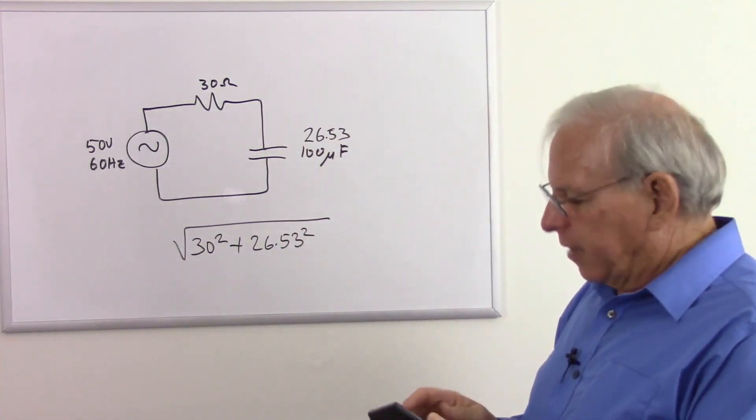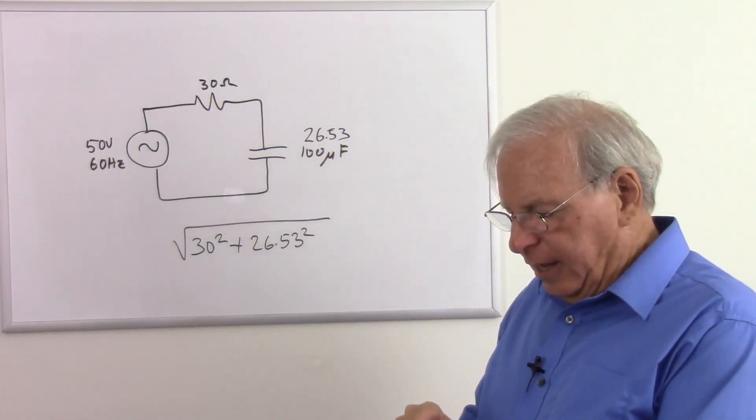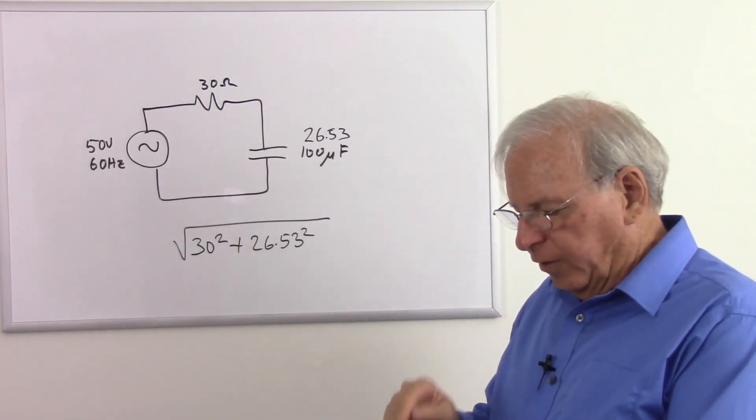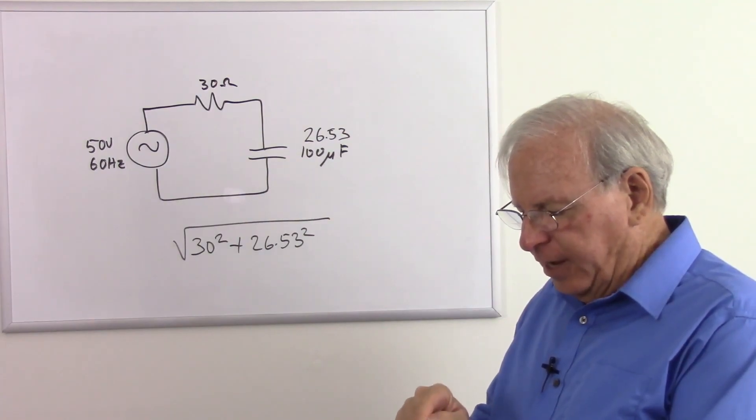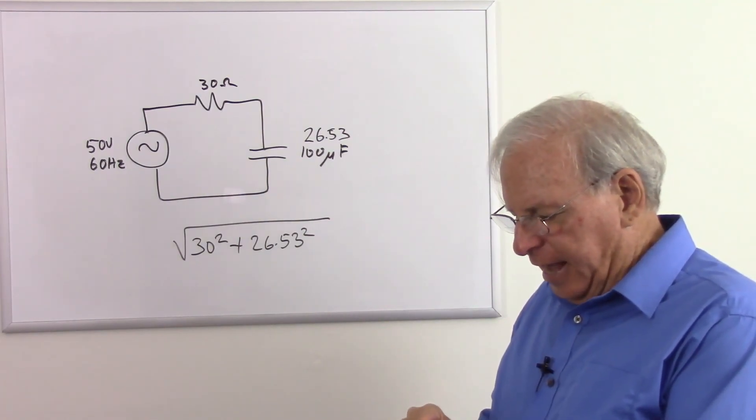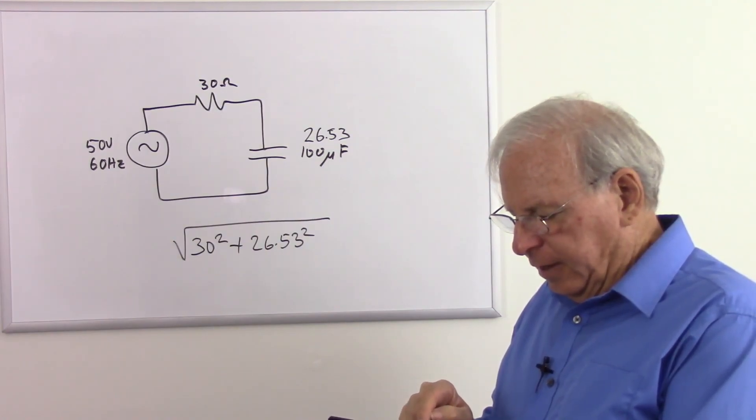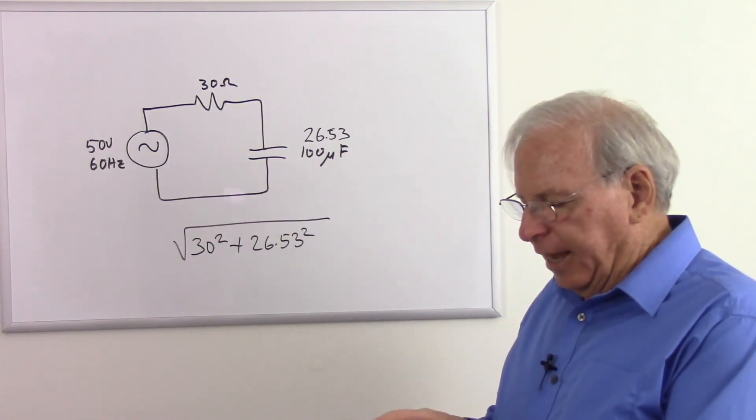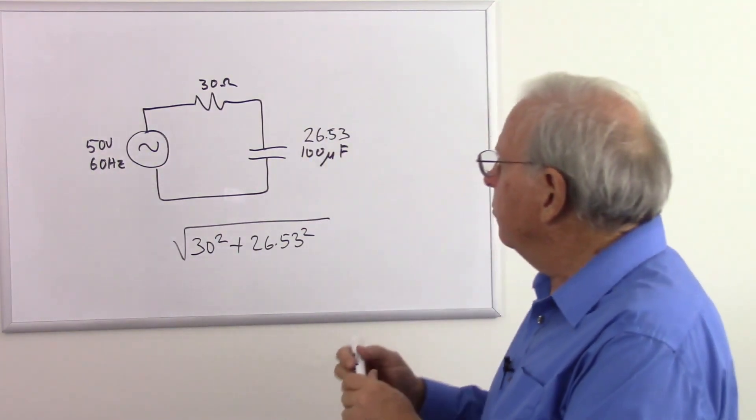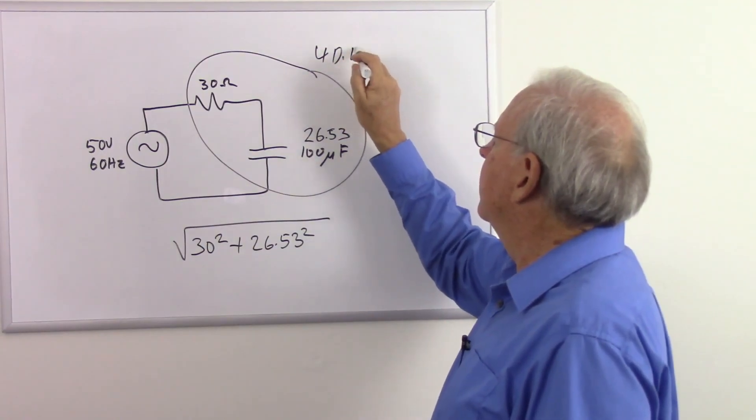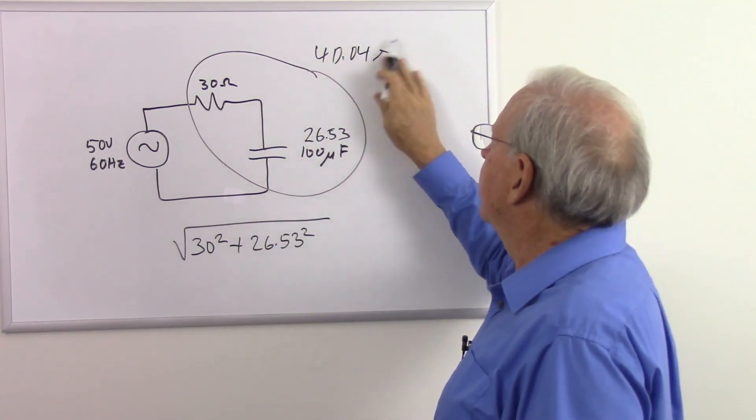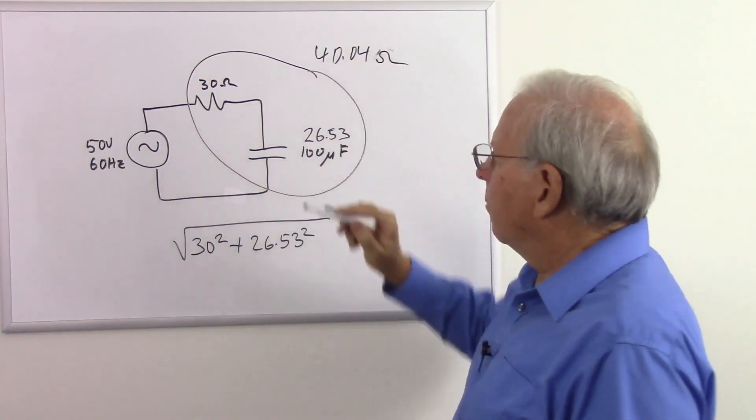So let's do that here. So I take 30 and I square that, store that in memory. Now I take 26.53, square that, add that to my memory, hit the equal sign, and now I take the square root, and I got 40.04 ohms for my impedance.